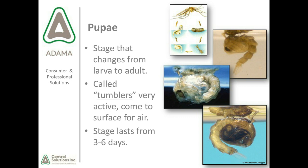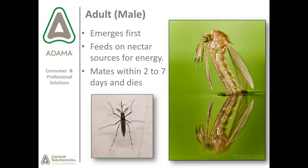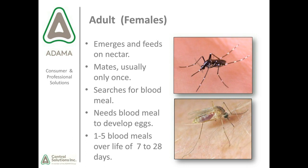From larvae, mosquitoes move to the pupal stage — called tumblers — which also live in water and come to the surface for air. This stage lasts 3 to 6 days. Adult males emerge first, feed on nectar for energy, mate within 2 to 7 days, and then die. Adult females also feed on nectar, mate usually only once, then seek a blood meal to develop eggs. They generally take 1 to 5 blood meals over a lifespan of 7 to 28 days.